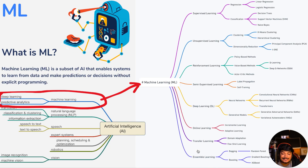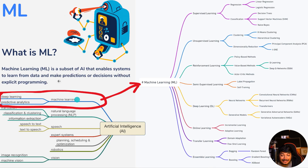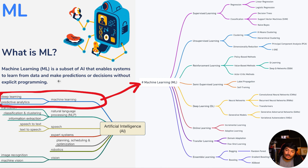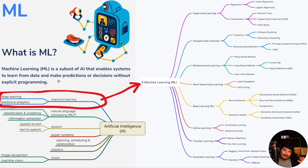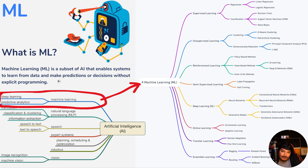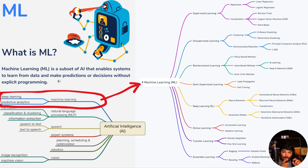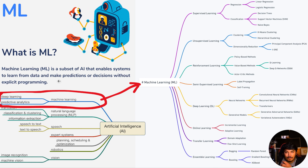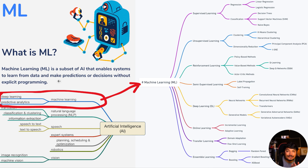ML is a subset of AI that enables systems to learn from data and make predictions or decisions without any explicit programming. Explicit programming means when you program software to do if-else conditions, switch statements, or for loops. Without writing all those loops and all those logics, if a machine can perform from its own intelligence based on past data, we call that machine learning.